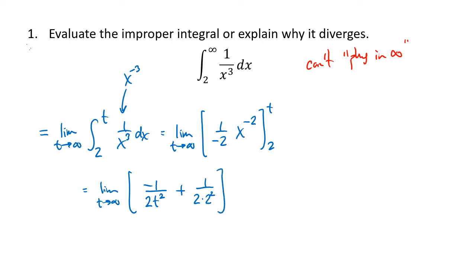Now we want to think about what's going to happen as t gets larger and larger. On the top of that fraction we have negative 1, and on the bottom we have 2t squared. t is going to be a gigantic number — a billion, a trillion, a quadrillion — so that bottom is going to be a gigantic number. Whenever we have a regular-size number like negative 1 divided by a gigantic number, that's going to go to 0. So we're just going to be left with 0 plus 1 eighth, which is 1 eighth.